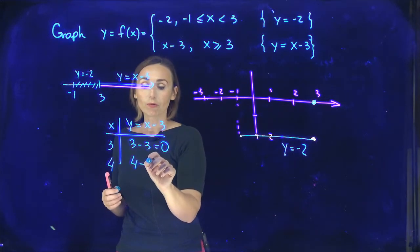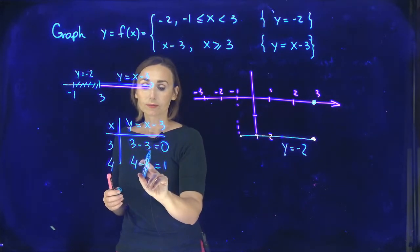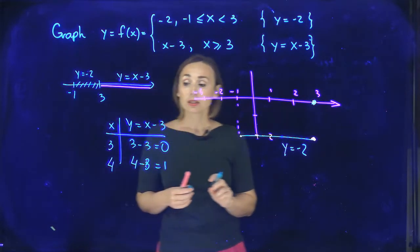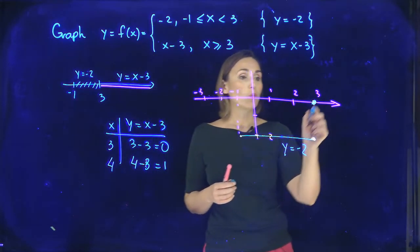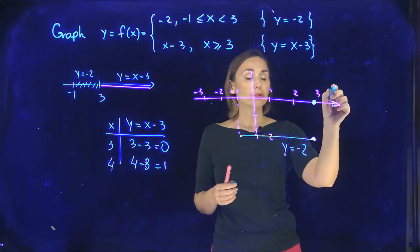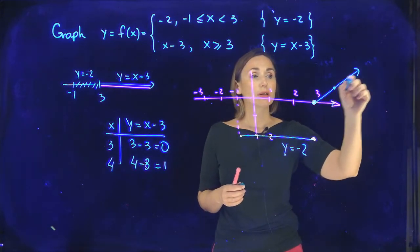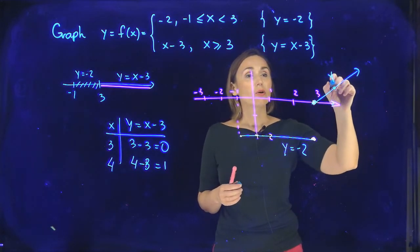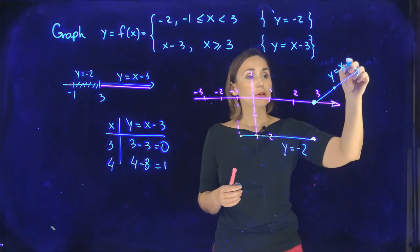After that let's take x equals 4: 4 minus 3 gives number 1, so the point will be (4, 1). And here is my line y equals x minus 3.